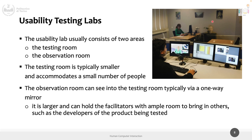Typically the observation room has a one-way mirror - like in police movies - where you can see what happens but in the other room they don't see you. That is the professional usability testing lab. We don't have such a lab, and not all usability testing happens in dedicated labs, but the key ingredients are still there: a facilitator, someone doing the test, a device to run the application, and a system to observe what's happening and track what occurs during the evaluation.